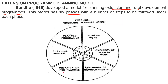The six phases are: first, organization for planning; second, planning process; third, plan program; fourth, plan of work; fifth, execution of plan of work; and sixth, evaluation of accomplishment. These six phases constitute the extension program planning model.